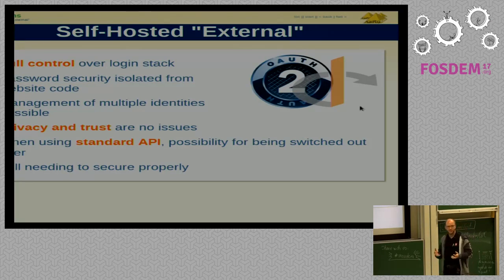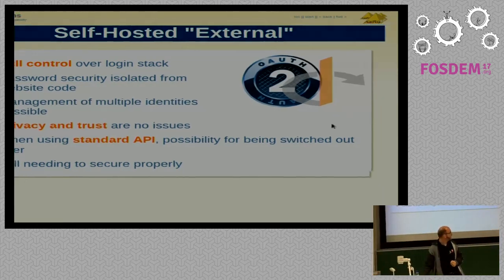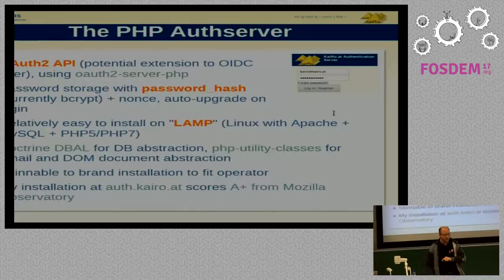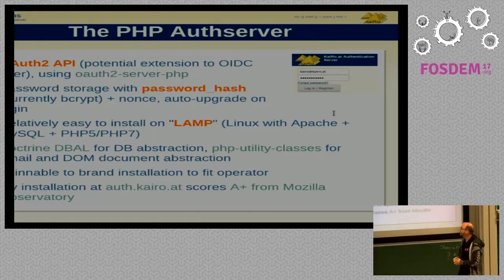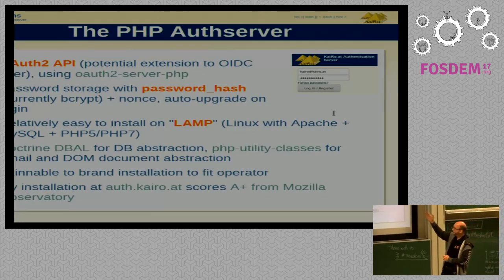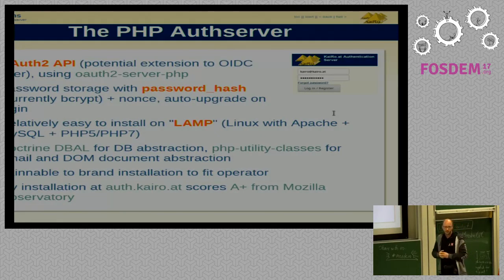The downside is I still need to secure the whole system and passwords properly, but there's good documentation on how to do that, and there are libraries for handling OAuth 2. So I know PHP, and I thought: well, there are libraries for OAuth 2 — let's do something with that. And I created the PHP Auth Server. It uses the OAuth 2 API via the OAuth2-Server-PHP library, and it can be extended to OpenID Connect, though I haven't done that yet. The password storage uses PHP's standard password_hash function, which uses bcrypt — good enough with enough iterations, though there are better algorithms out there.